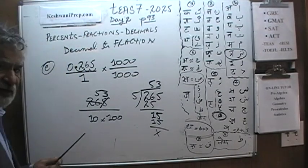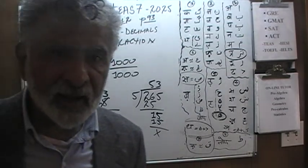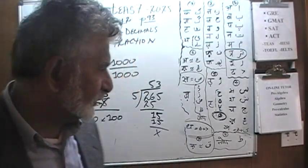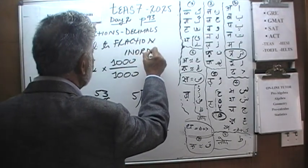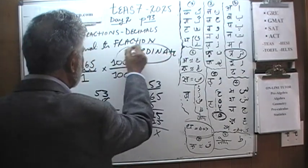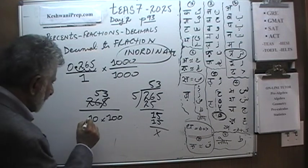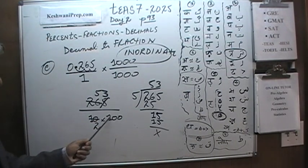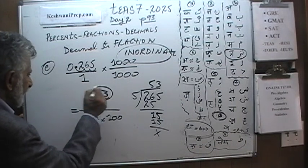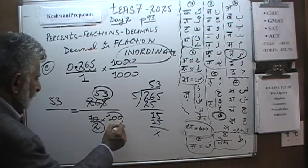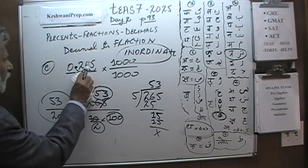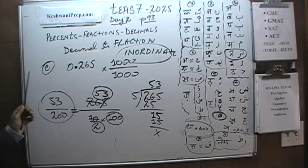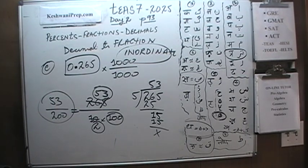On the top we have 53, and on the bottom we have 2 times 100, which is 200. So 0.265 when represented as a fraction is 53 over 200.